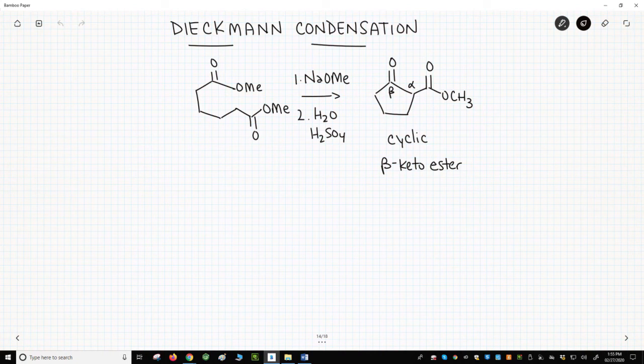In the middle of the screen is a Dieckmann condensation. Just like the Claisen, the Dieckmann makes a beta-ketoester as the product. The difference is that the Dieckmann also makes a new ring. Let's see how this works.